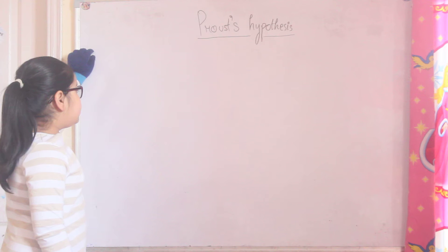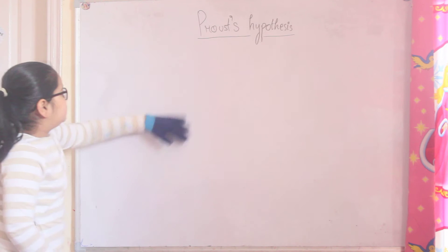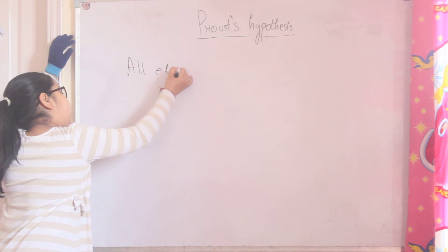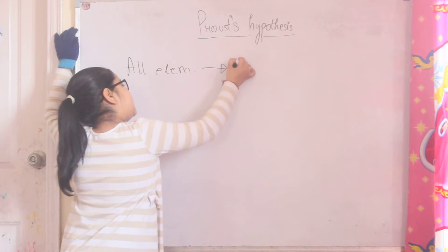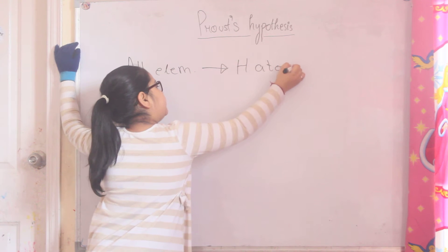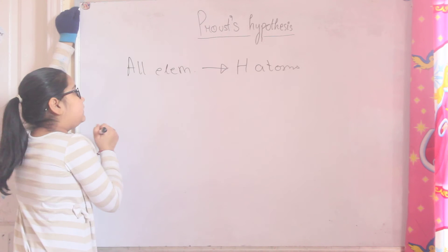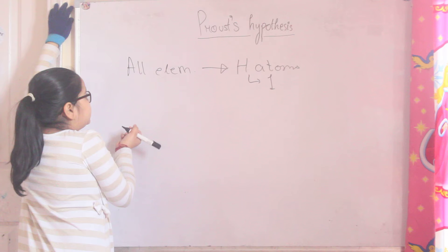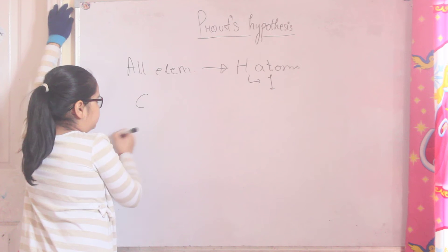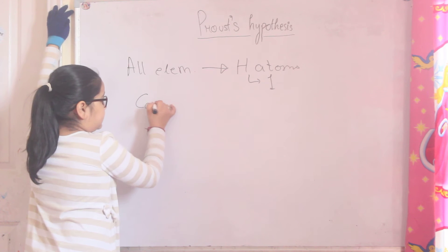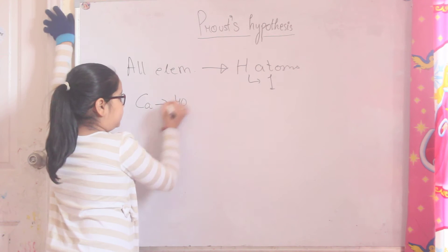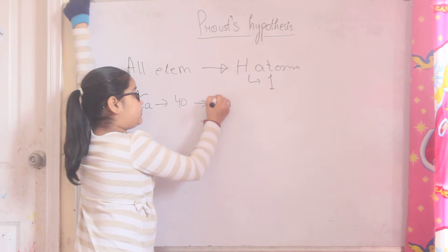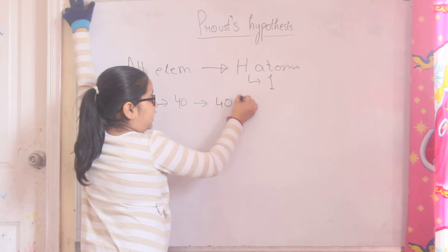Proust basically assumed that all elements are in the form of hydrogen atoms. For example, if I take calcium, calcium atomic mass is 40. Proust said that calcium atomic mass is 40 means that calcium is made up of 40 hydrogen atoms.